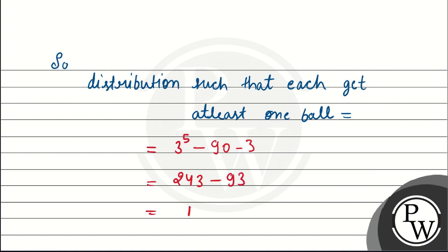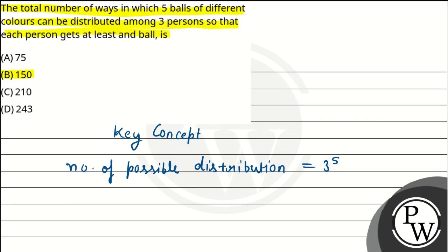This will be 150 ways. So how many ways will we have? 150. So final answer is option B, 150. Hope you understood it well, best of luck.